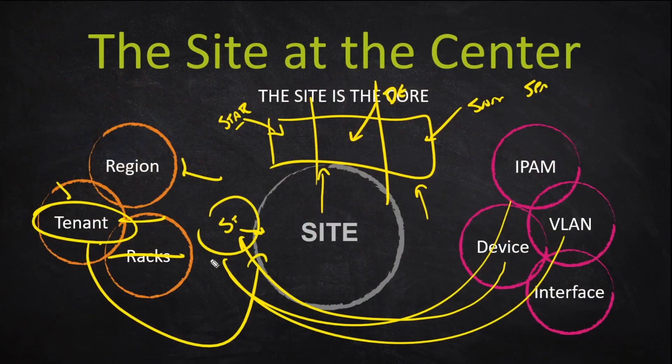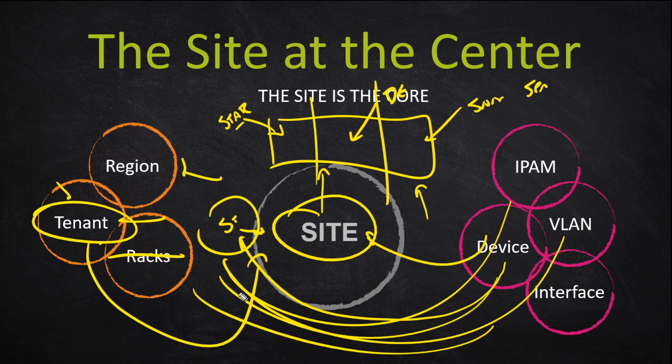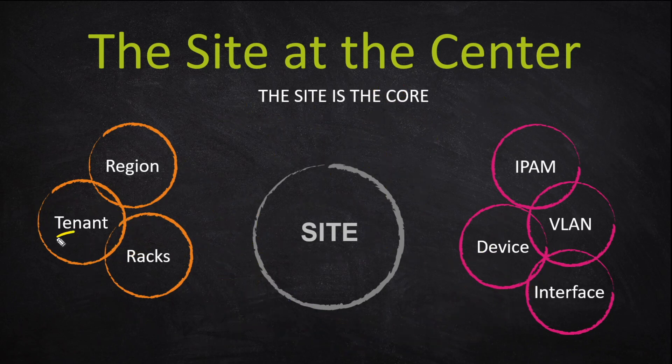Maybe there's a little wall-mounted rack on the wall of Starbucks, and all their equipment is right there — assigned to the tenant. But in that office complex, maybe they have one router that's shared — one internet connection that all the tenants share. In that case, assign that router to the site and then all the individual devices to the individual tenants. So tenant is your way of subdividing that site.